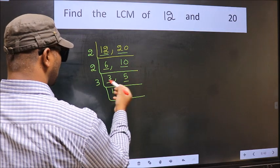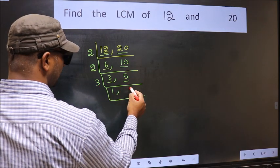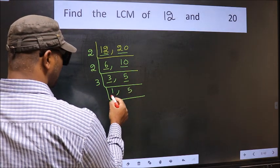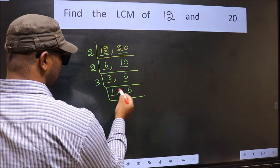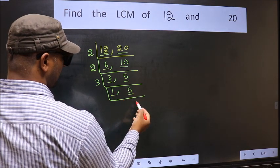The other number 5, not divisible by 3. So we write it down as it is. Now we got 1 here. So focus on the other number 5.